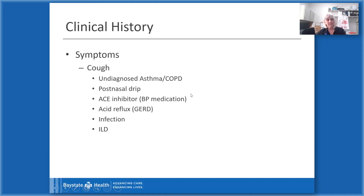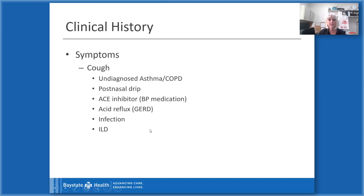The next symptom is cough. A cough can be present with undiagnosed or diagnosed asthma or COPD; caused by post-nasal drip; by blood pressure medications called ACE inhibitors, which typically cause a dry cough; acid reflux or GERD, where acid leaking into the trachea causes irritation; an infection; and also interstitial lung disease.